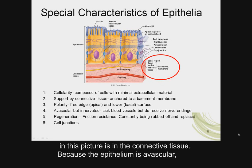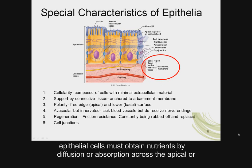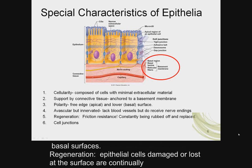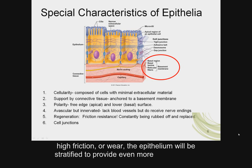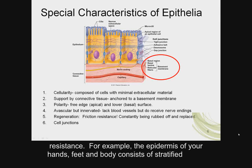4. Avascularity — epithelia do not contain blood vessels; notice the blood vessel in this picture is in the connective tissue. Because the epithelium is avascular, epithelial cells must obtain nutrients by diffusion or absorption across the apical or basal surfaces. 5. Regeneration — epithelial cells damaged or lost at the surface are continually replaced through the division of stem cells within the epithelium. In areas of high friction or wear, the epithelium will be stratified to provide even more resistance.